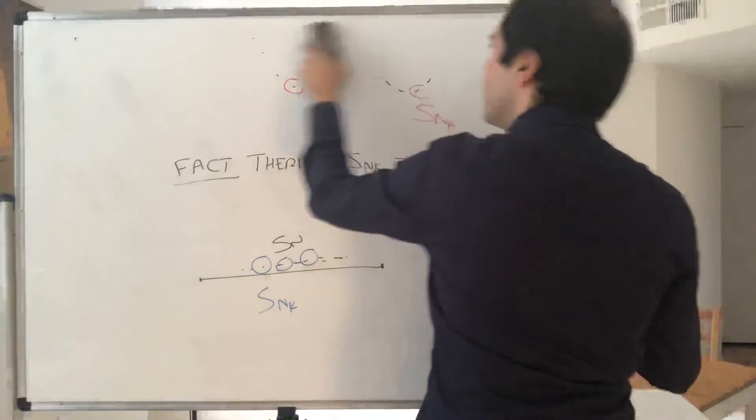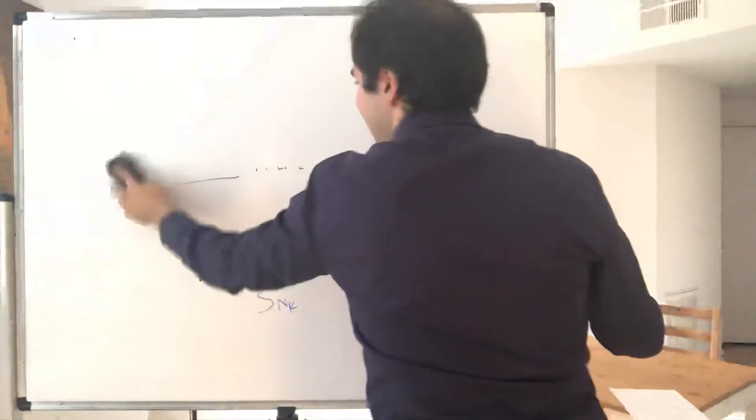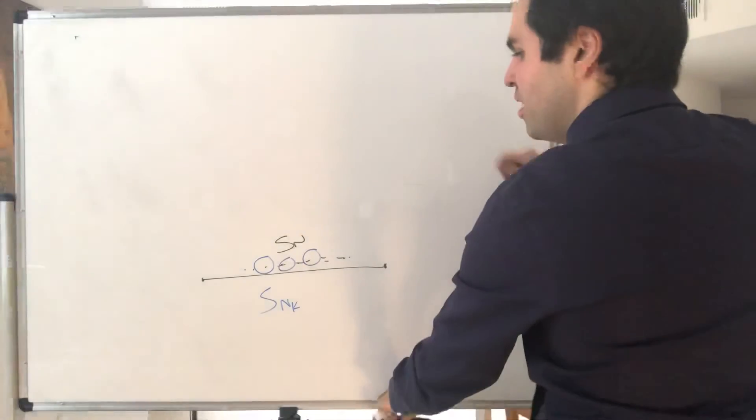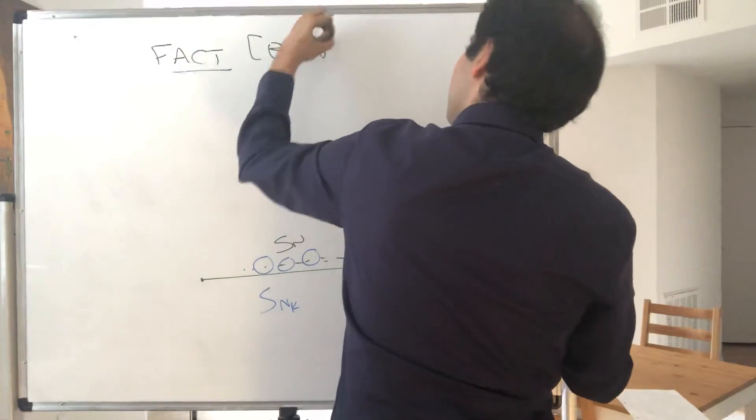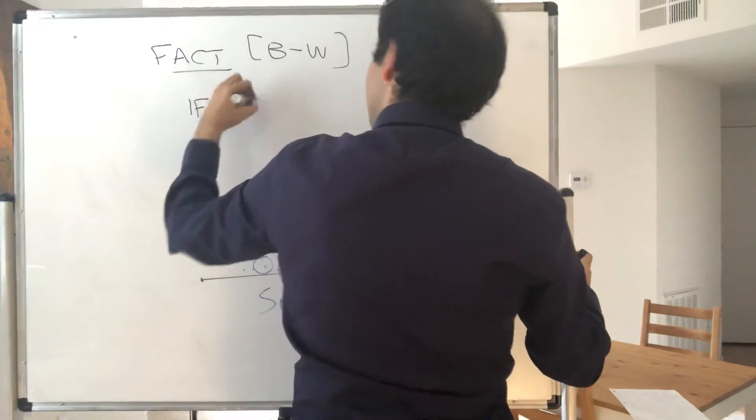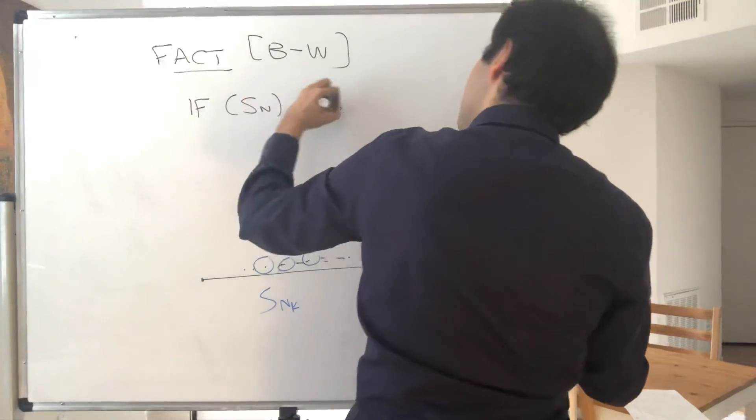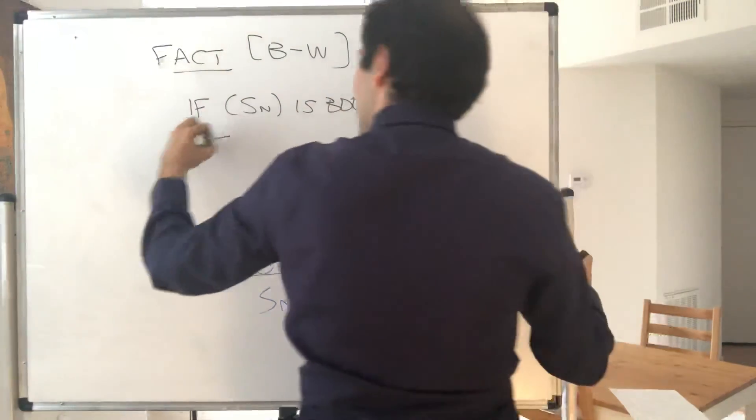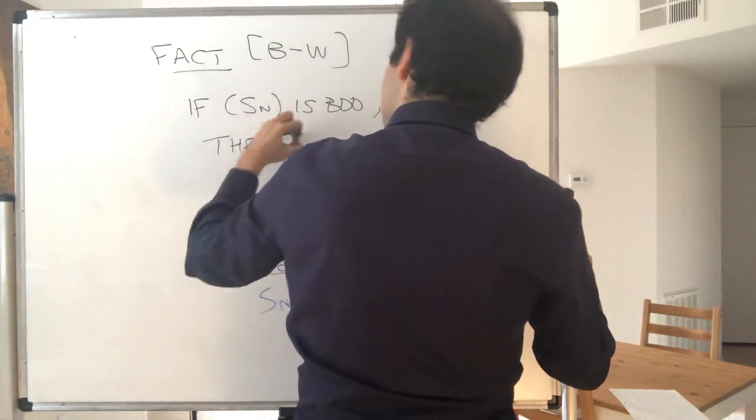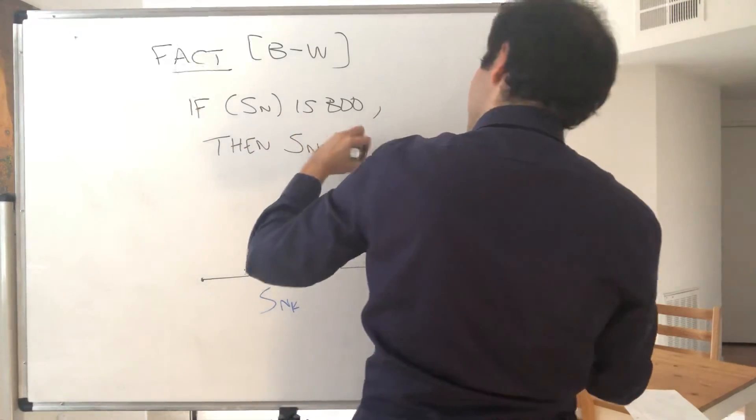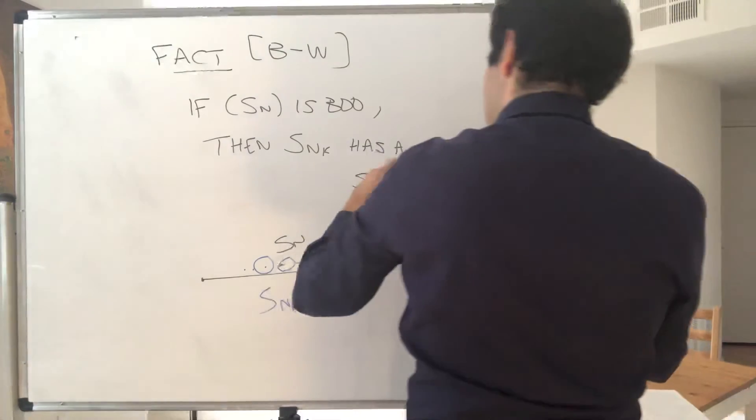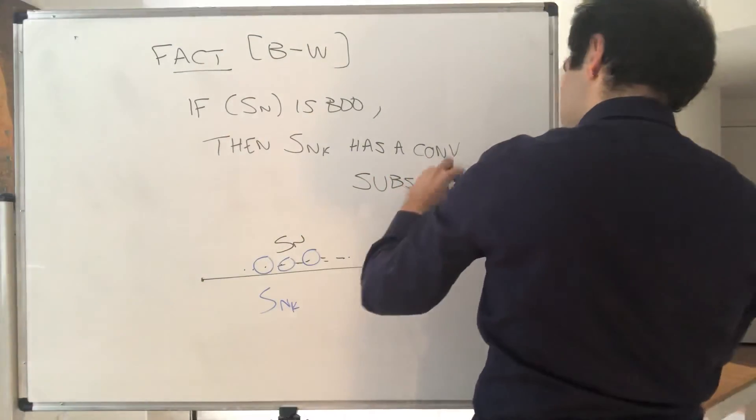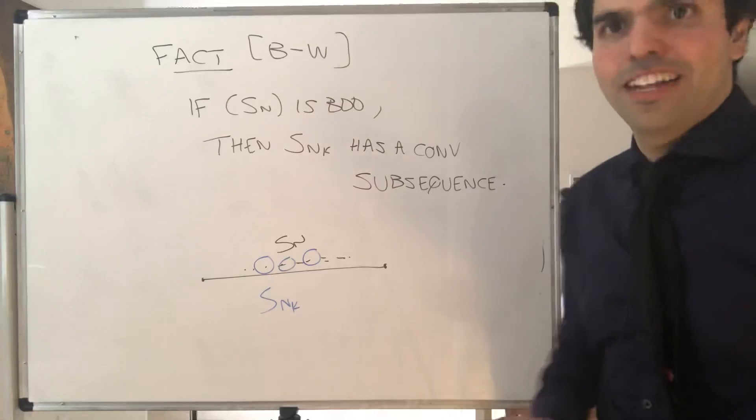Kind of like the string to a balloon. The SnK is the string that holds the balloon fixed so that it's bounded in some sense. So fact, Bolzano-Weierstrass: if Sn is bounded, then Sn has a convergent subsequence.